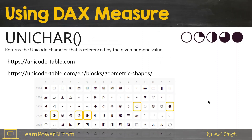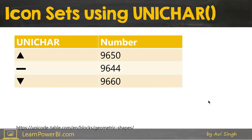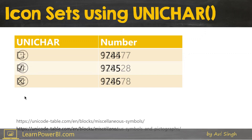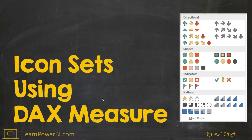Let's go back to the slide deck. There are other Unicode characters that might be useful — for example, an up arrow, no-change, and a down arrow, which would be great for year-over-year comparison. You could also use smiley faces depending on what you're trying to show, or checkboxes. You can raid the Unicode table and use those to build an icon set using a DAX measure.